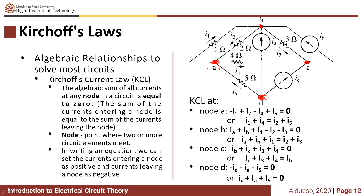Or if we rearrange the equation, the currents leaving the node — I1 and I4 — are equivalent to the currents entering the node, which are I2 and I5.